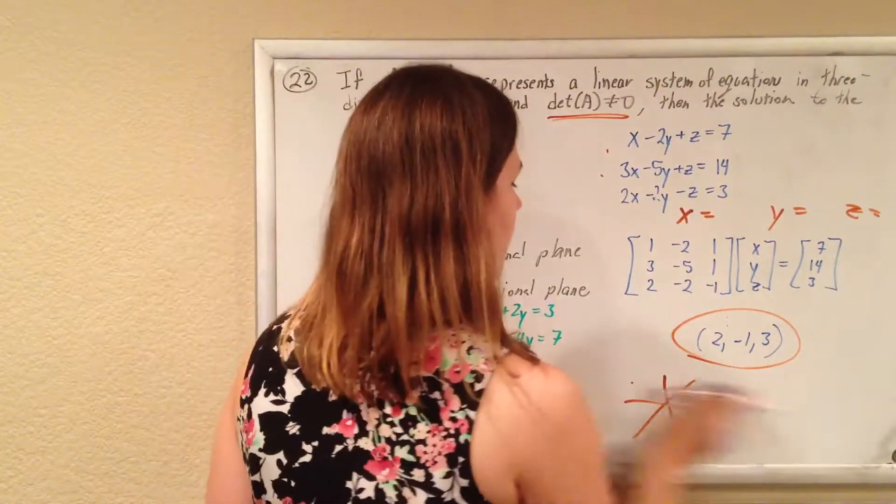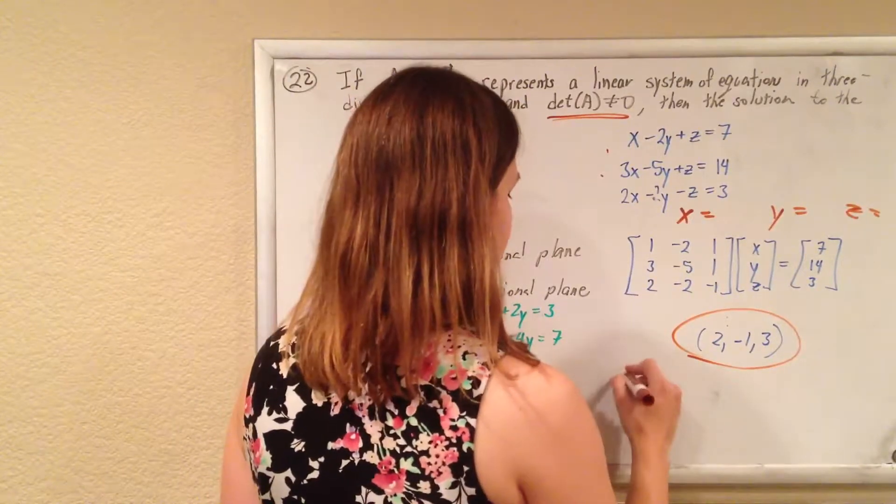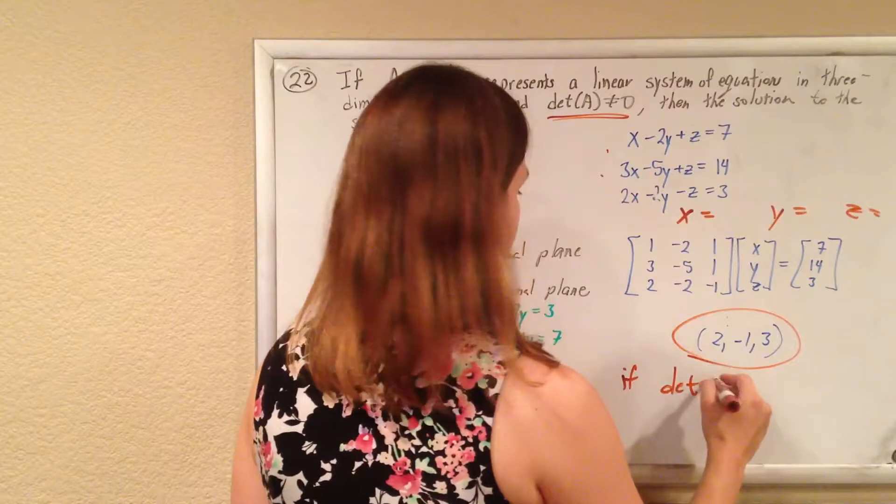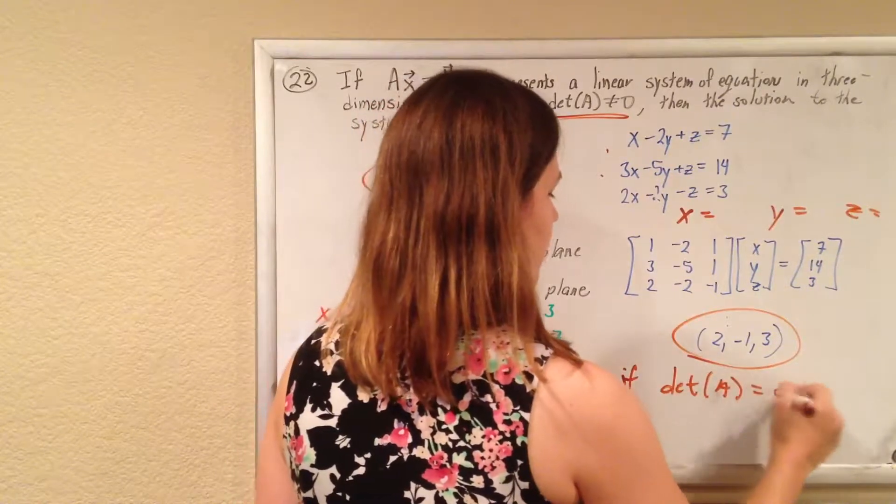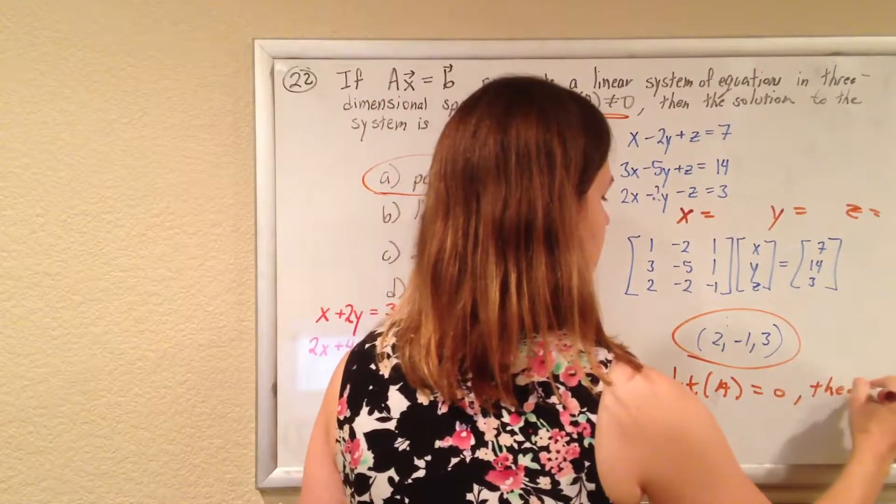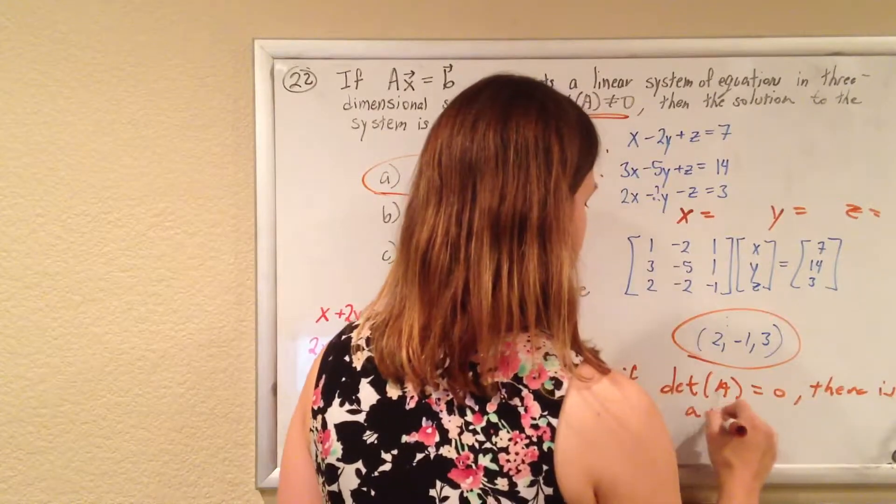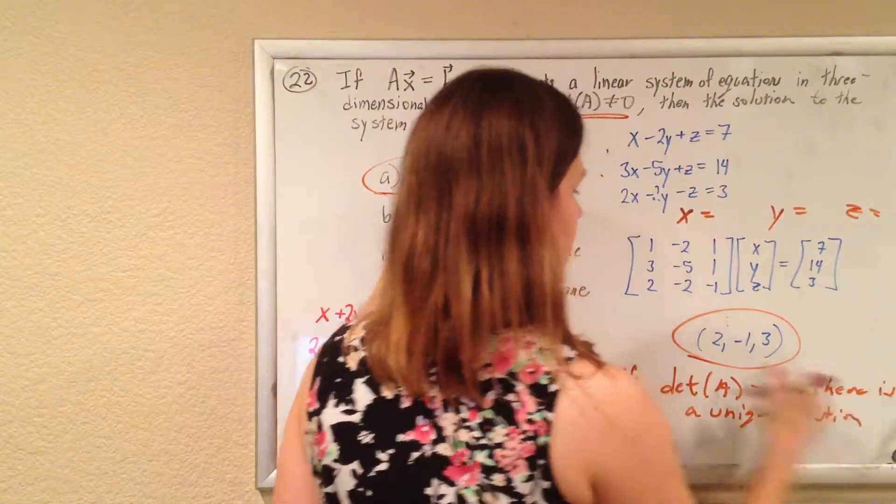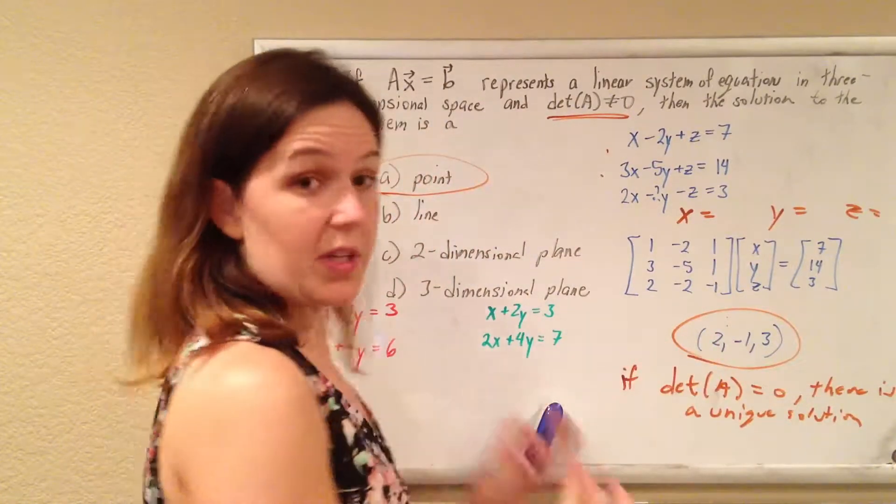your theorem is, if the determinant doesn't equal zero, there's a unique solution, and that solution is just represented by that one point.